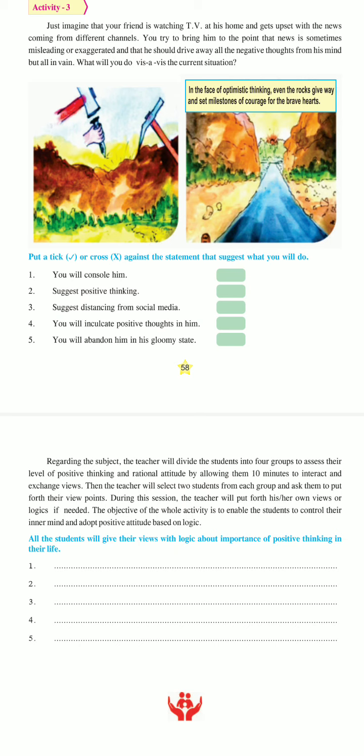Option 1: you will console the friend and suggest positive thinking — ask her to be positive, acknowledging that there are many negative things in the world but also many positive ones, and try to make her focus on those. Option 2: suggest distancing from social media or TV — reduce it or stop watching so she is not connected to that negativity. Option 3: inculcate positive thoughts in your friend — teach her how to incorporate positive thinking into her life. Option 4: you will abandon your friend in this gloomy state.